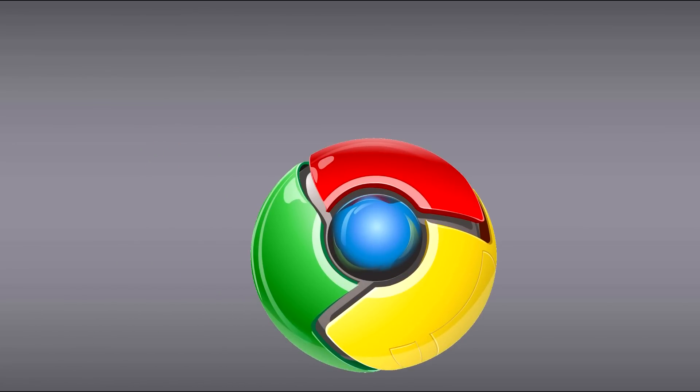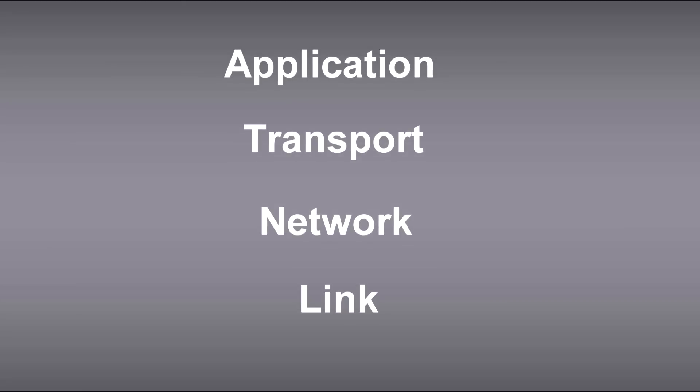The application layer controls the applications such as a web browser. The web browser sends a request to the internet, and this request goes from the application layer to the transport layer.